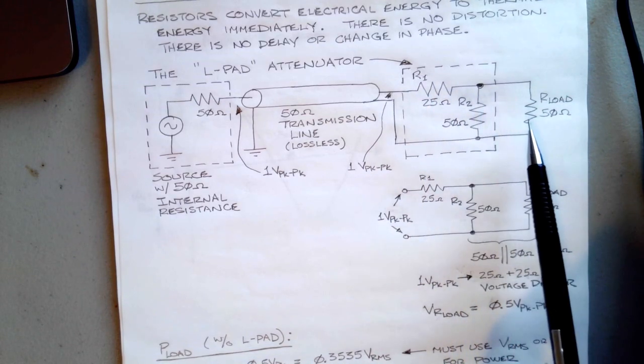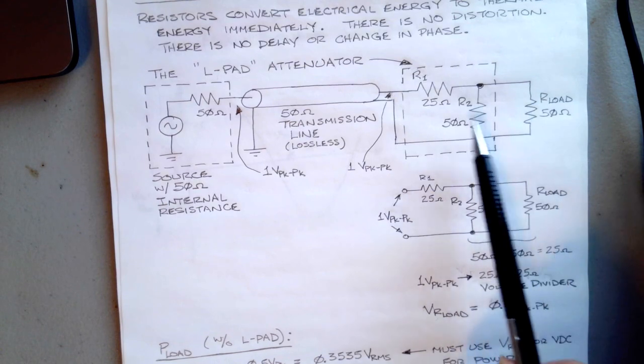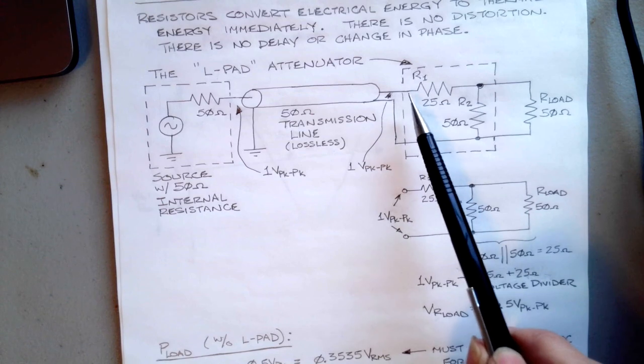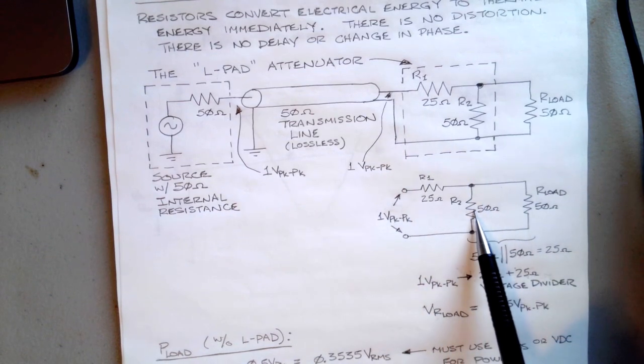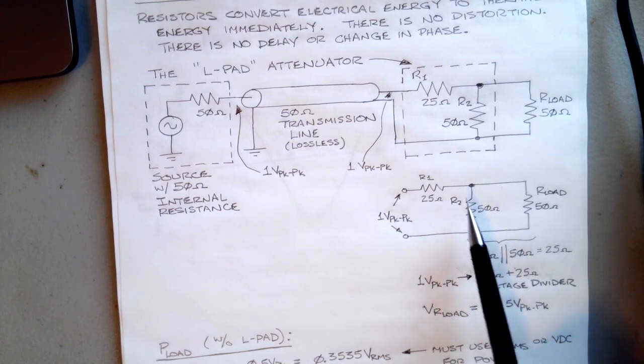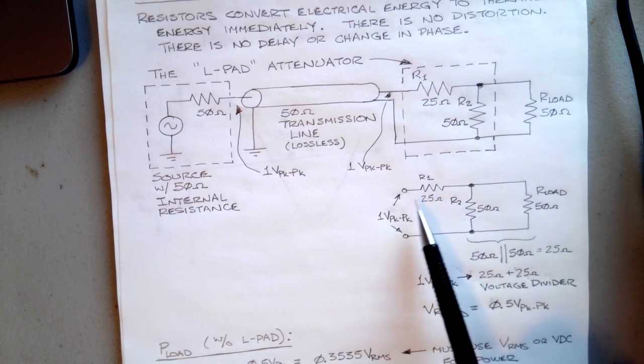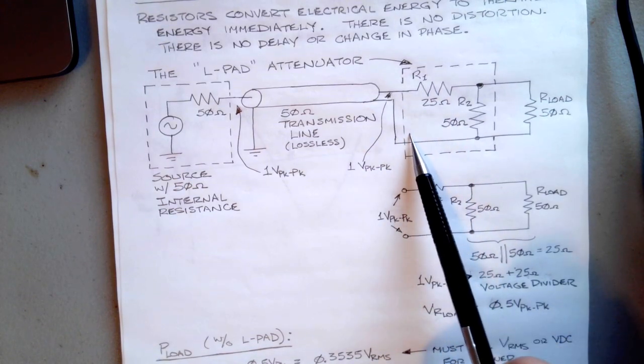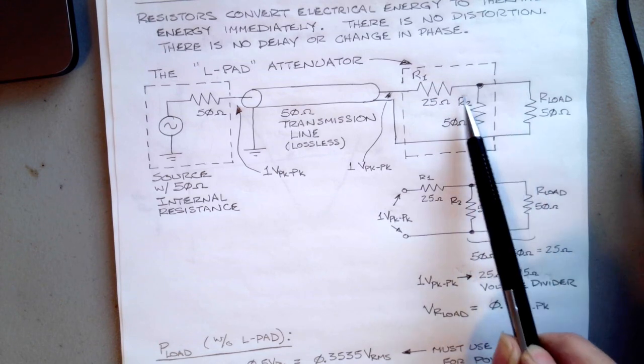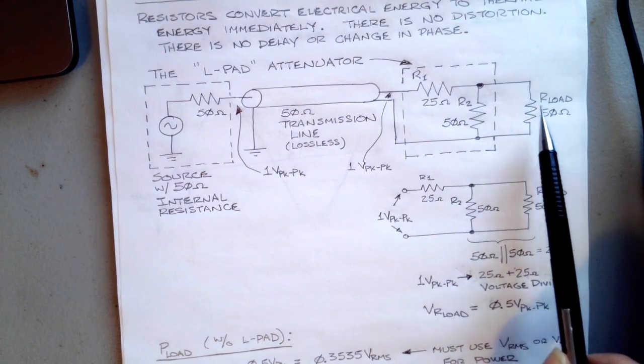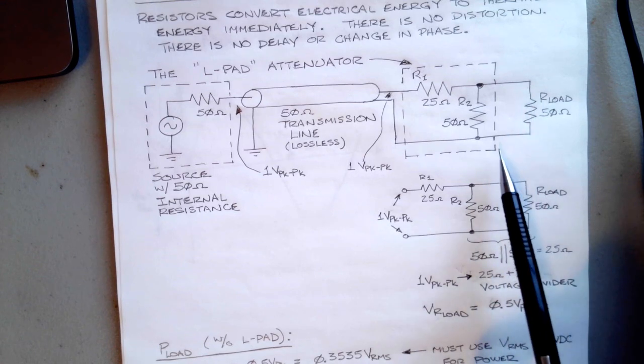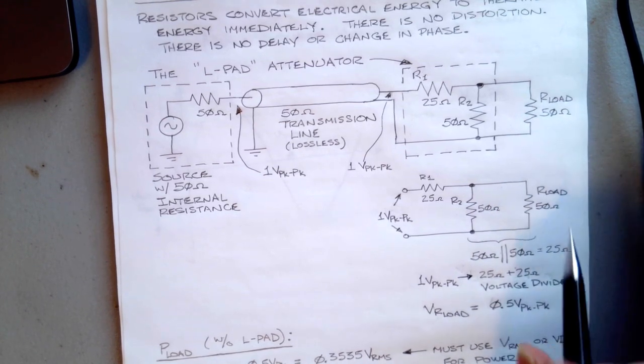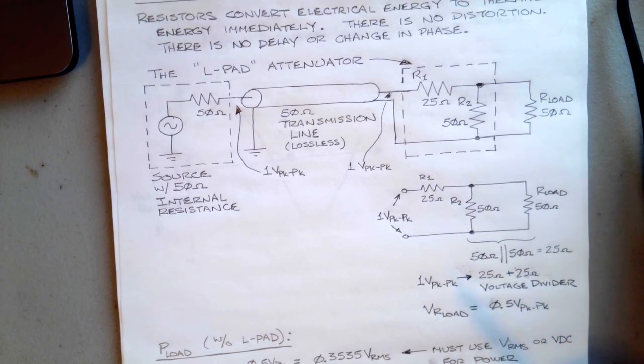Now if we go to talk about the power that's delivered through this thing—by the way, you notice I called this an L-pad attenuator because it's an upside down L and it's a handy circuit for attenuating. What's neat about this circuit here is it still looks like a 50 ohm load—it just burns up power. This guy over here just sees something coming at him with less voltage and he's happy with that.